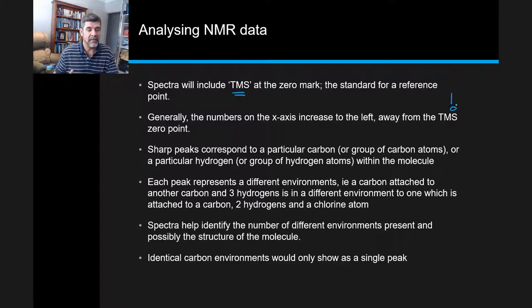Every different peak represents a different environment. For carbon, that's easy because it tells us how many different types of carbons there are at an absolute minimum. Two peaks means a minimum of two carbons and potentially more.